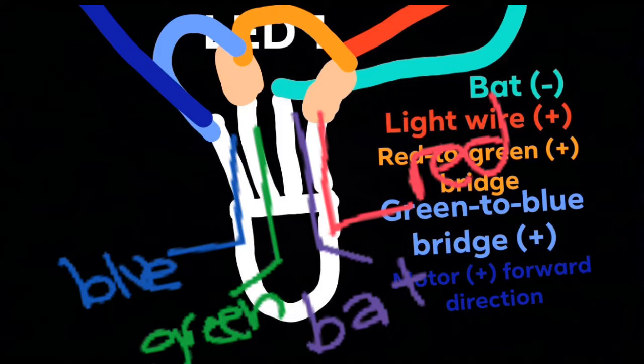Next, bridge the green side to the blue side. You do not need a resistor for the blue side. Now finally, connect a wire to the blue side of the LED that goes to the forward side of the motor. You'll have to figure that out yourself, as well as the positive light wire.